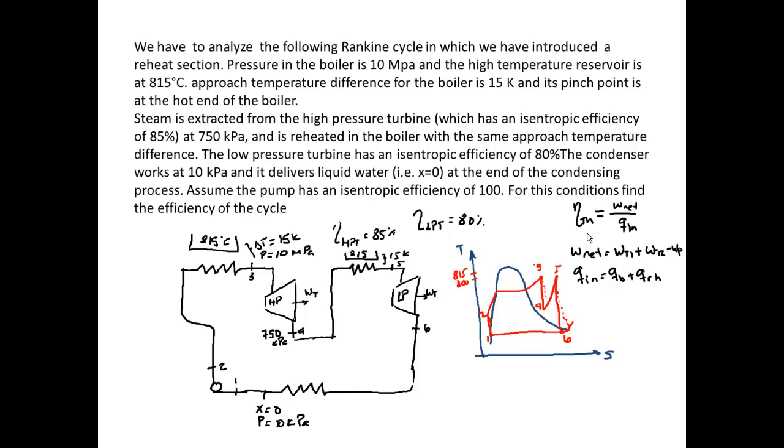In this case, our net work will be the work provided by turbine 1 plus turbine 2 minus work of the pump. Q_in is the total heat that we are adding in the boiler plus the Q in the reheater. We know that each of these components we're going to solve by first law analysis for open systems.